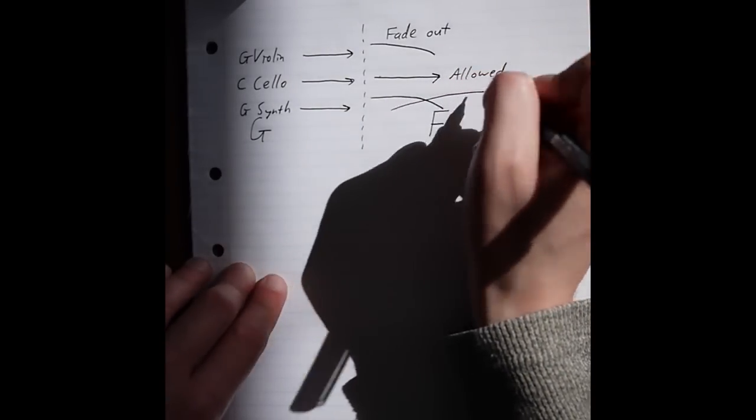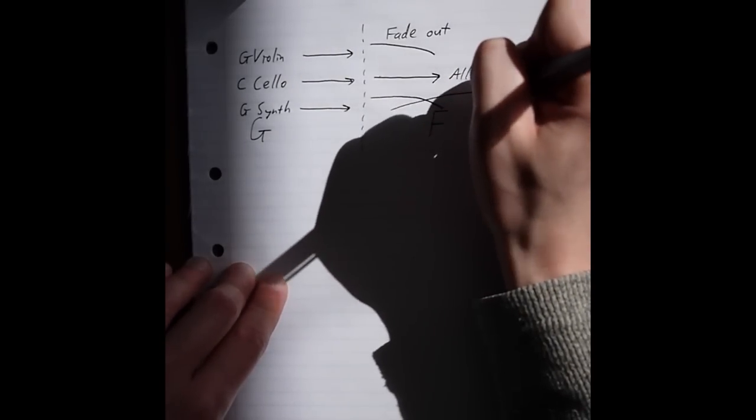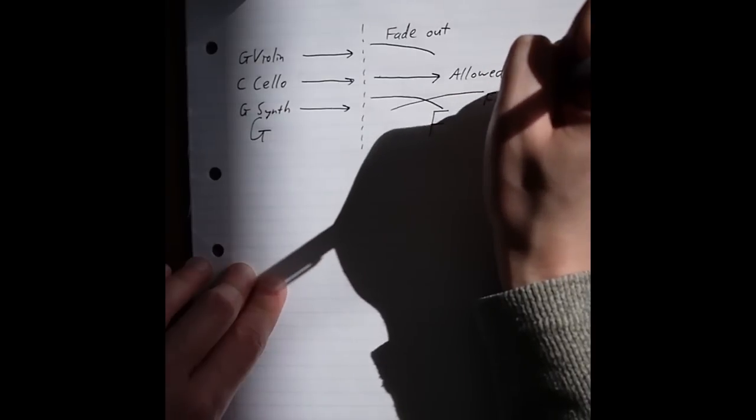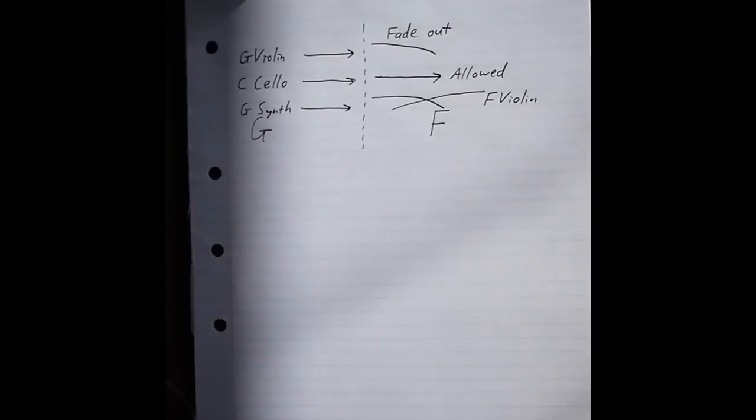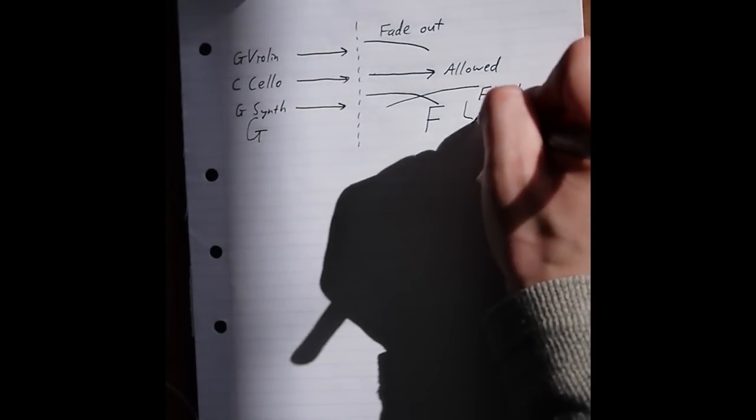Sometimes samples need to be cut off early, because the chord changes. When the chord changes, the music engine lets notes carry on if they harmonize. Otherwise it does a smooth fade out, which randomly varies a bit in length.